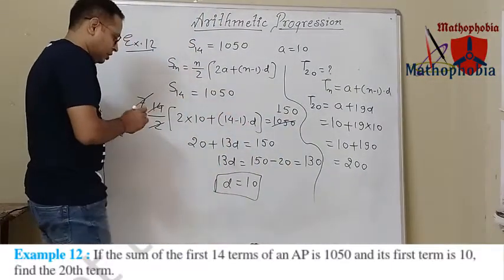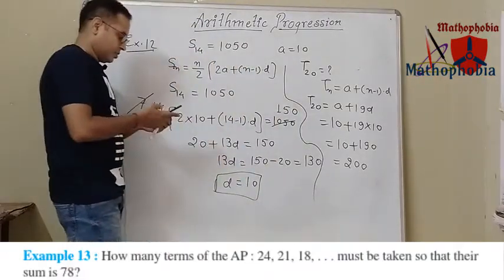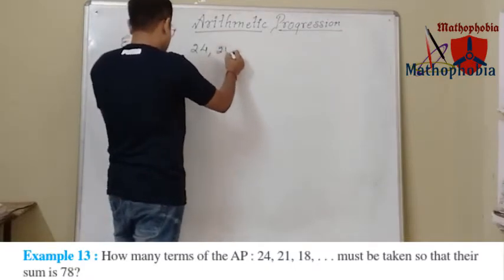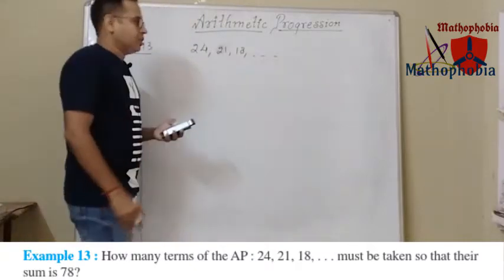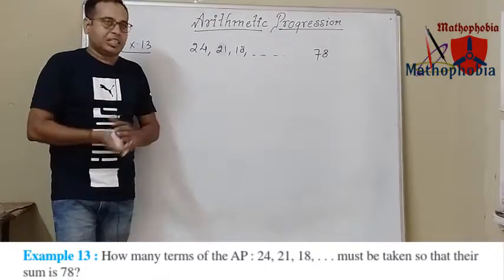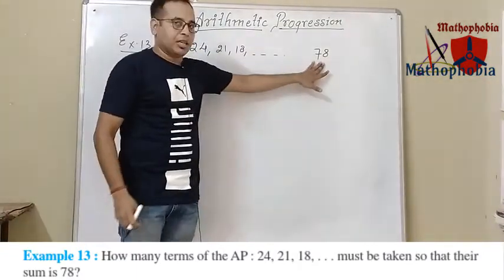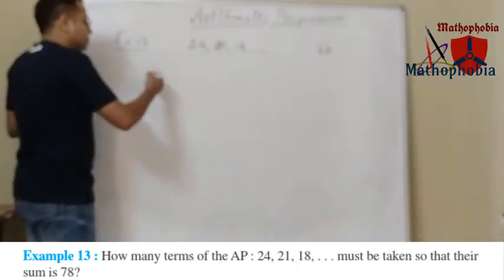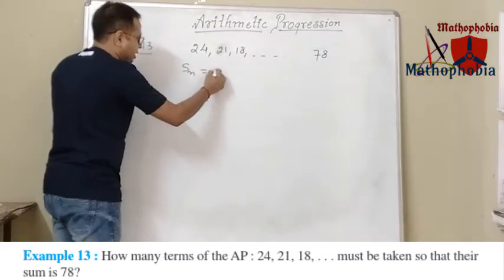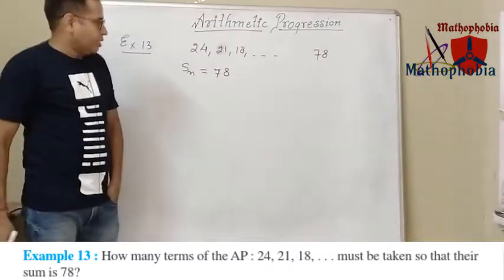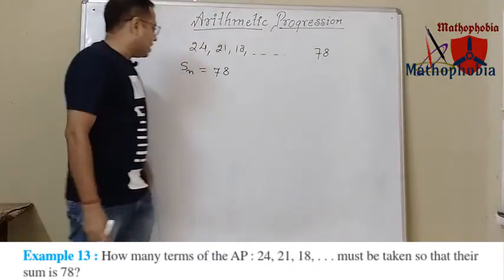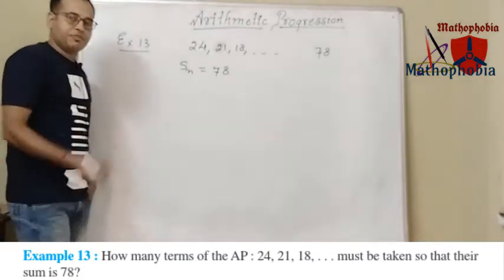Let's move on to the next question. The sequence is 24, 21, 18 and so on. How many terms of this arithmetic progression must be taken so that the sum becomes 78? Let us suppose that n terms of this AP make the sum 78. That is, Sn equals 78. If we can find the value of n, our task is fulfilled.